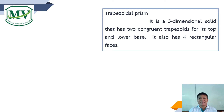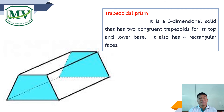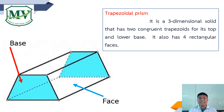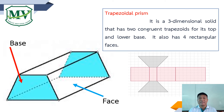The second type of quadrangular prism is the trapezoidal prism. It is a three-dimensional solid that has two congruent trapezoids for its top and lower base, and also has four rectangular faces. Here is the net of the trapezoidal prism. As you can see, there are four rectangles and two trapezoids. The four rectangles represent the faces, and the two trapezoids represent the bases.